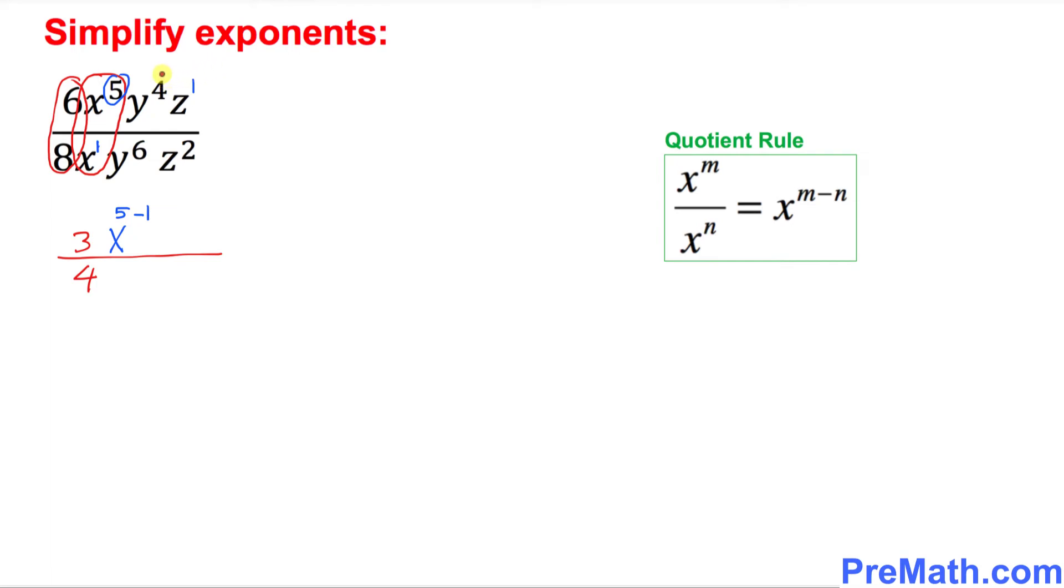Let's look at now the next one, the y variables. The base is y. So in this case we're going to be subtracting their exponents. Ask yourself, which side has the highest degree or the power? You can see the denominator, the bottom, has the highest power. That means y is going to stay at the denominator, and then you subtract 6 minus 4.